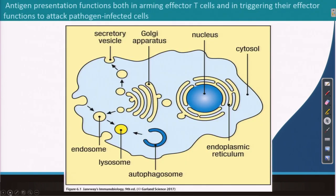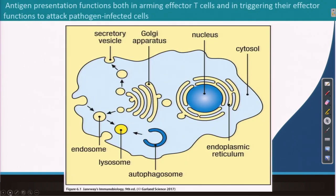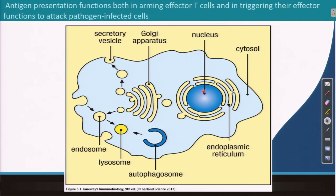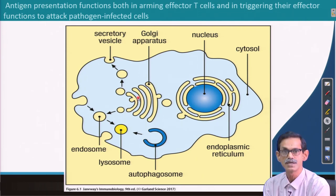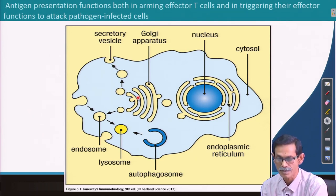Before going into detail, let me discuss something very simple that most of you already know. This slide shows one cell with a nucleus, endoplasmic reticulum, cytoplasm (the blue part), and the Golgi apparatus. An important function of the Golgi is to send proteins to the membrane or to different parts of the cell.